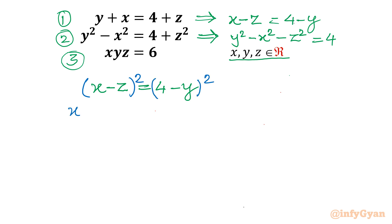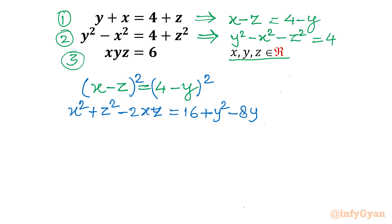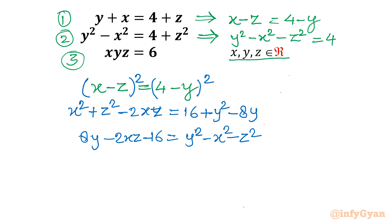Expanding using (a minus b) whole squared: x squared plus z squared minus 2xz on the left, and 16 plus y squared minus 8y on the right. Now I will take all the square terms to the right, giving y squared minus x squared minus z squared, and the remaining terms on the left side: 8y minus 2xz minus 16 equals that expression.